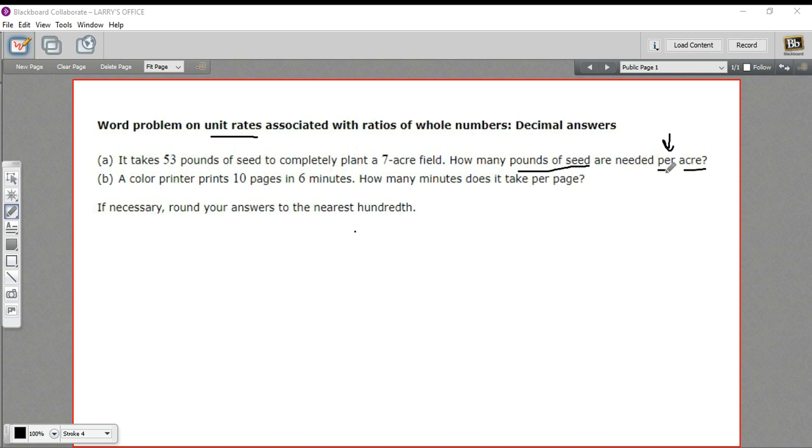So we're going to take pounds of seed and divide it by the number of acres. So 53 divided by 7 is going to be our pounds per acre. You could also write this as a fraction, 53 divided by 7 this way. I'm going to punch that into my calculator, and it says they want the nearest hundredth, so we're going to call this 7.57 pounds of seed per acre.